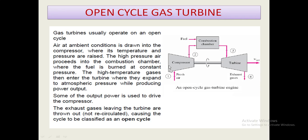Open cycle gas turbine: gas turbines usually operate on an open cycle. Air at ambient conditions is drawn into the compressor where its temperature and pressure are raised. The high-pressure air proceeds into the combustion chamber where the fuel is burned at constant pressure. The high-temperature gases then enter the turbine where they expand to atmospheric pressure while producing power output. Some of the power is used to drive the compressor. The exhaust gases leaving the turbine are thrown out and not recirculated, which is why the cycle is classified as an open cycle gas turbine engine.